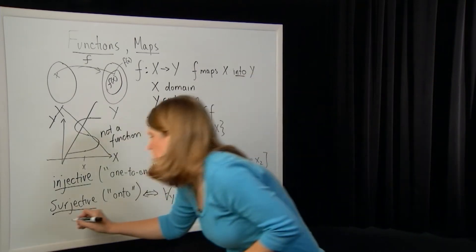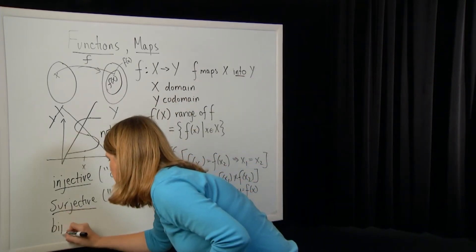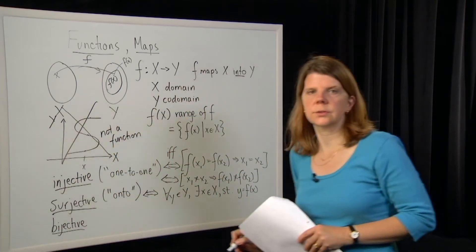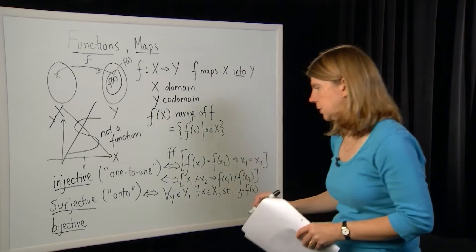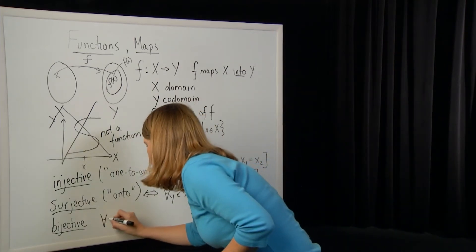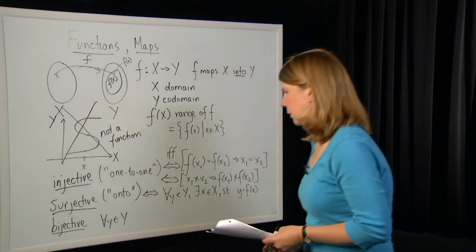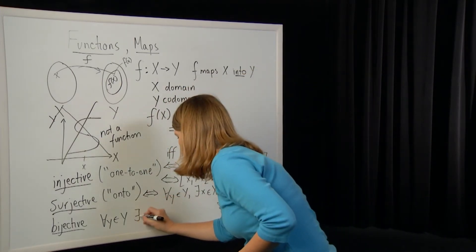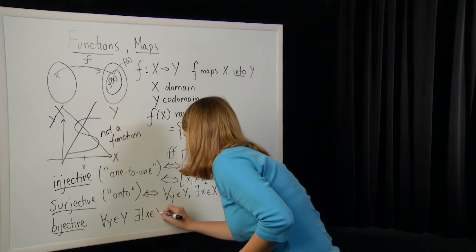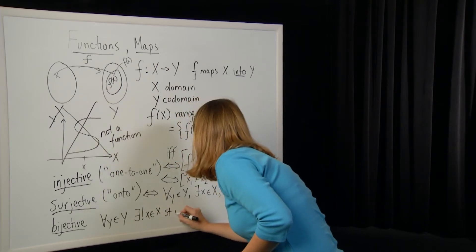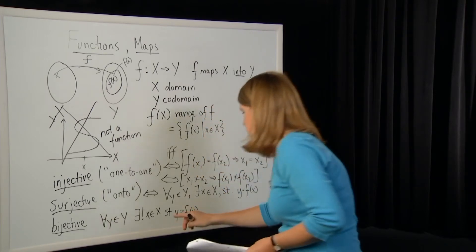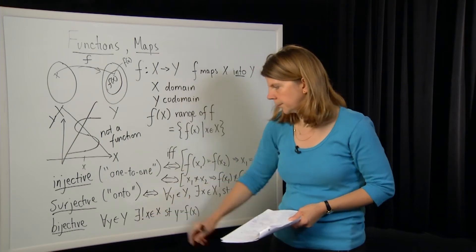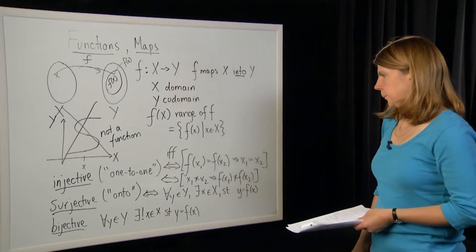A function is said to be bijective if it is both injective and surjective. So a function is bijective if and only if for all y in the codomain, there exists a unique x in the domain such that y is equal to F of x — the uniqueness coming from injectivity.